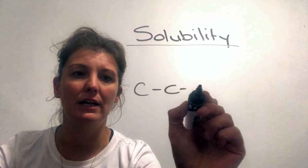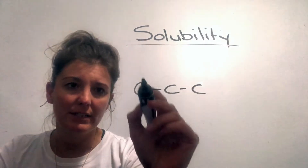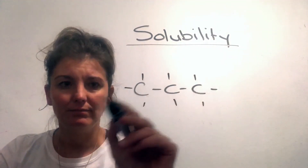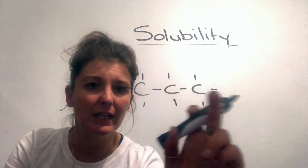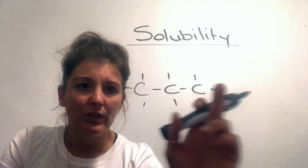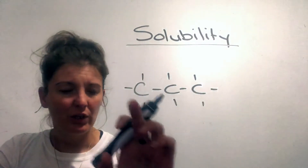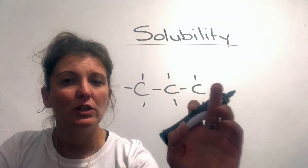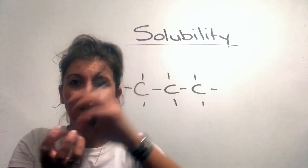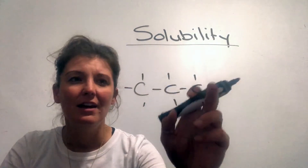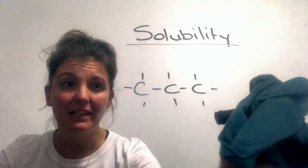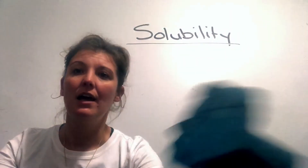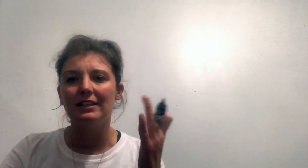An Alkane only has H's around the carbons — there's no definite difference between one side and the other of the molecule, so it is non-polar. Because the alkane is non-polar and water is polar, and remember only like dissolves like, the alkane will not dissolve in water. Therefore, all Alkanes are insoluble in water.